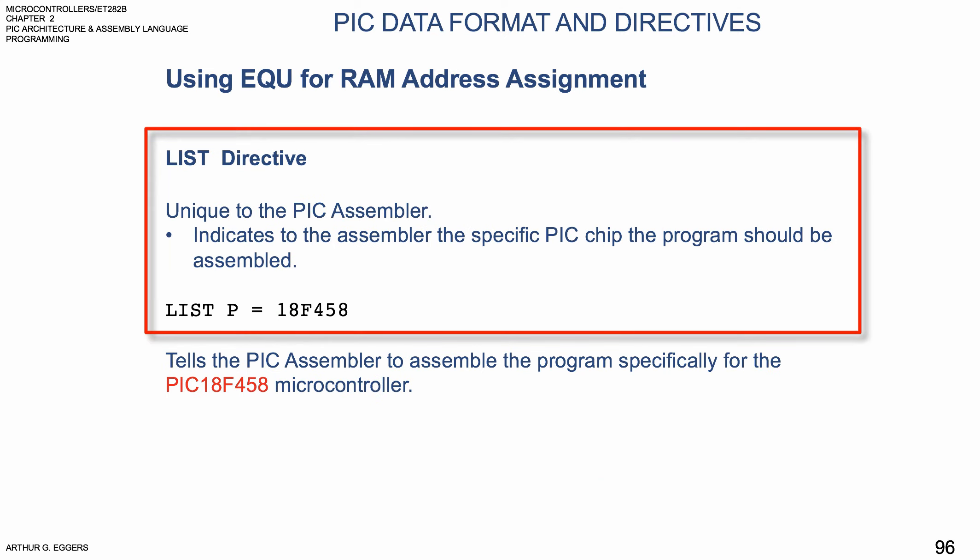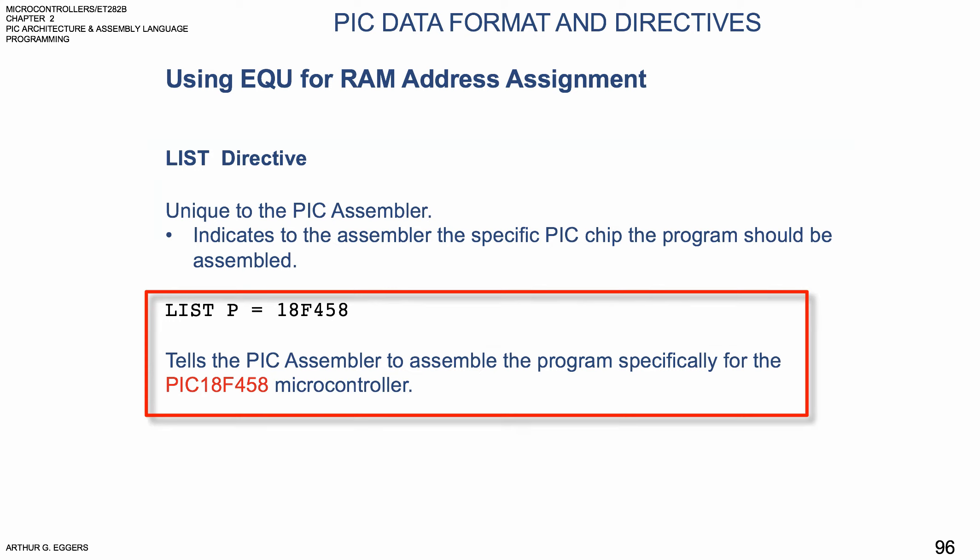The list directive, unlike ORG and end which are used by all assemblers, is unique to the PIC assembler. It indicates to the assembler the specific PIC chip for which the program should be assembled. For example, list P followed by the model number — such as 18F458 — tells the assembler to assemble the program specifically for the PIC 18F458 microcontroller. We use the list directive to state the target chip.